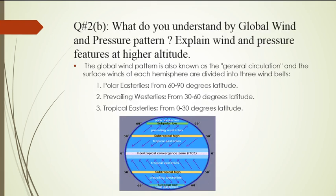Next question is number 2 part B: What do you understand by global wind and pressure pattern? Explain wind and pressure features at higher altitude. First we will discuss global wind and pressure pattern, then its wind and pressure features at high altitude. The global wind pattern is also known as general circulation, and the surface winds of each hemisphere are divided into three wind belts.